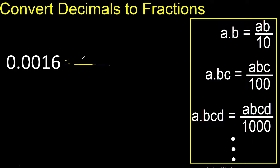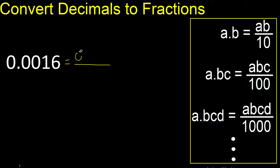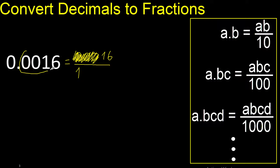First, all the numbers without point, like this. Eliminate 0, here ok. Always number 1 — after the point there are 4 numbers, therefore 4 zeros.